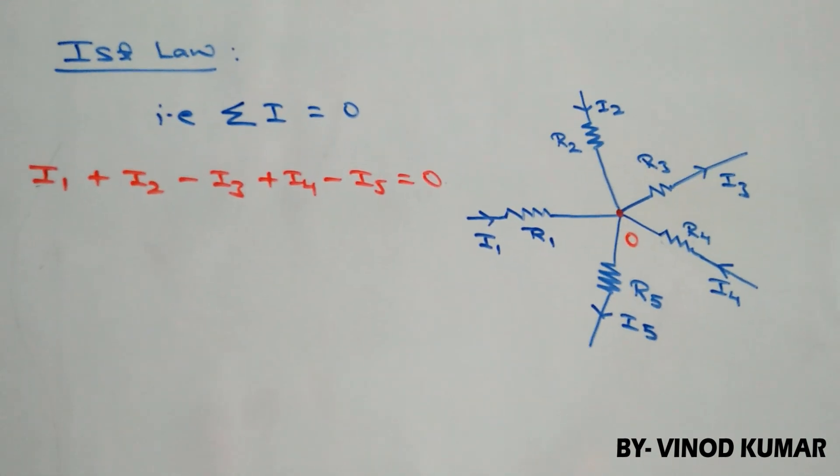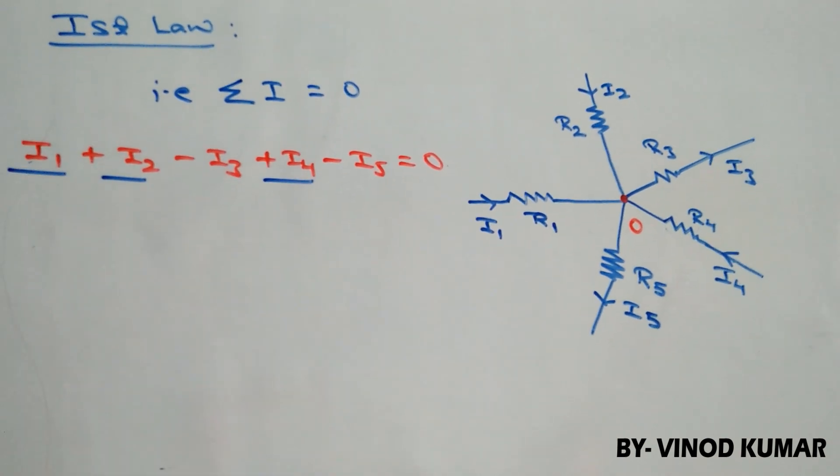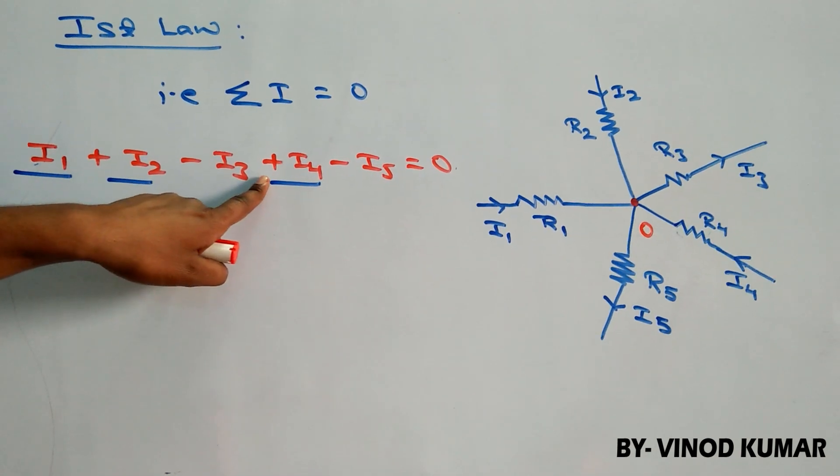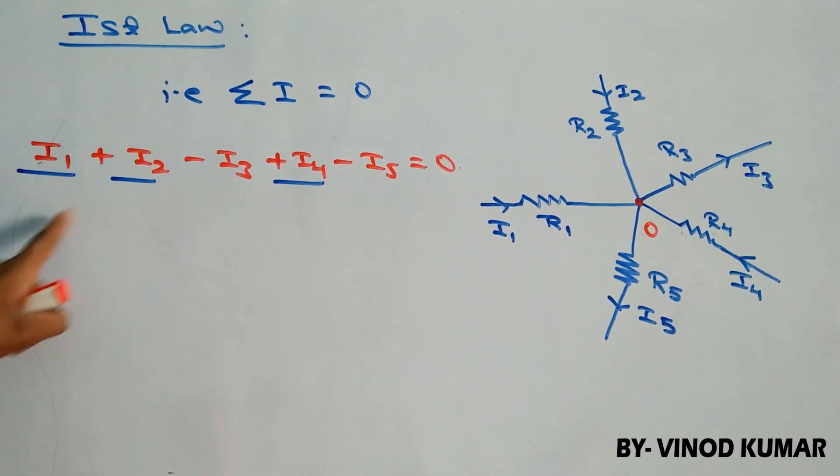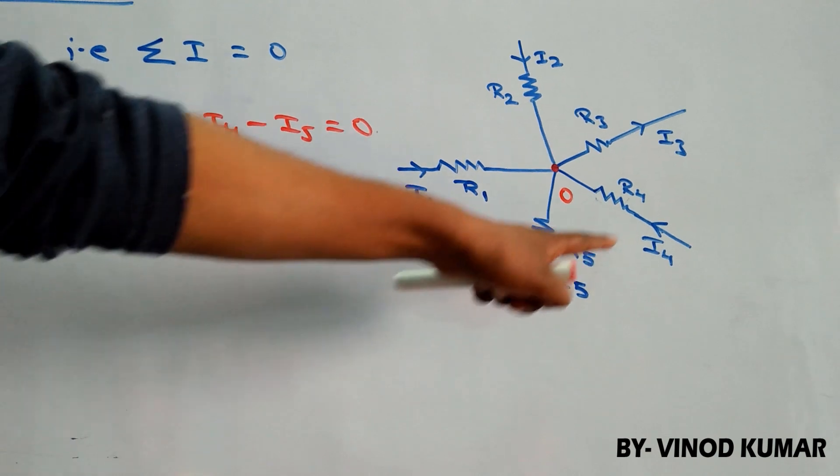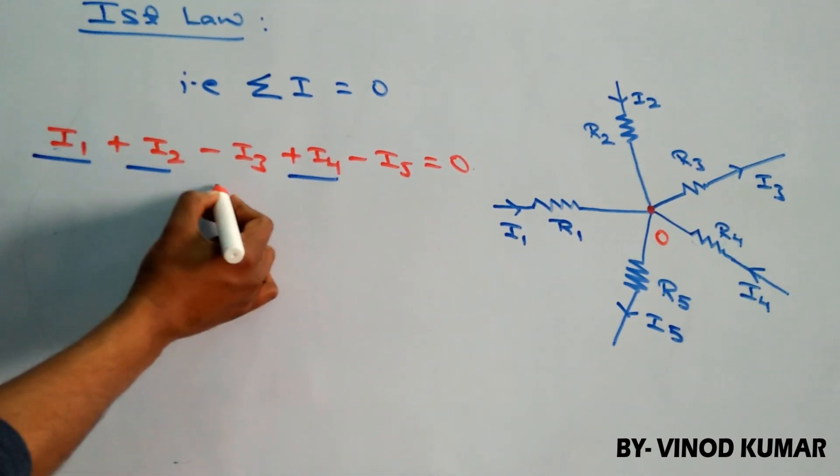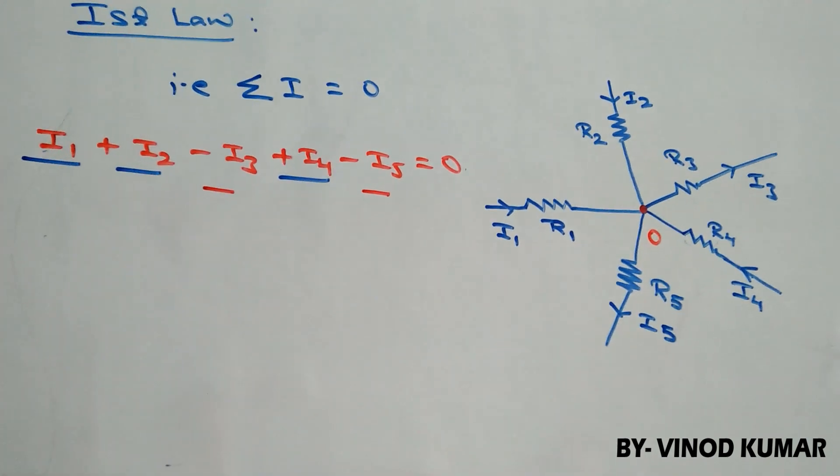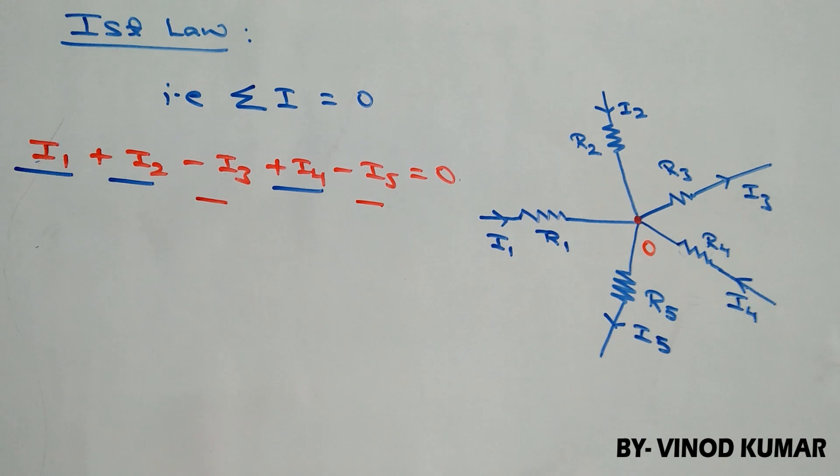You can see here, I use the currents I1, I2, I4. In front of this, I use positive sign which indicates that these currents are moving towards the junction and I use the negative sign because these are the currents which are moving away from the junction.